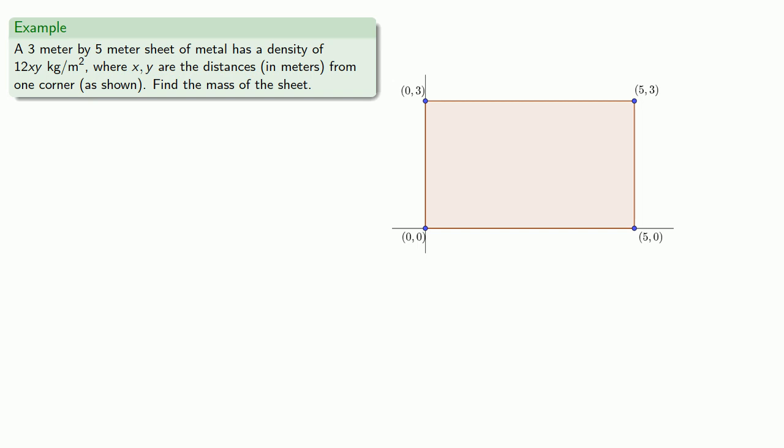If we draw our differential of area, a very small square, that differential of area dA has density 12xy, and so its mass will be density times area, 12xy dA.